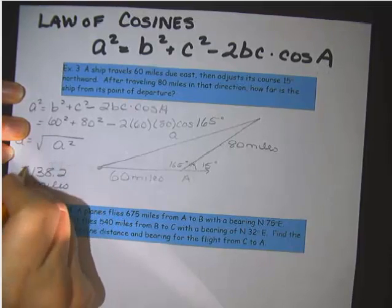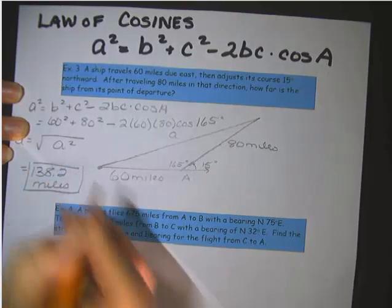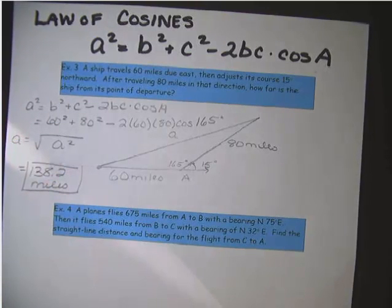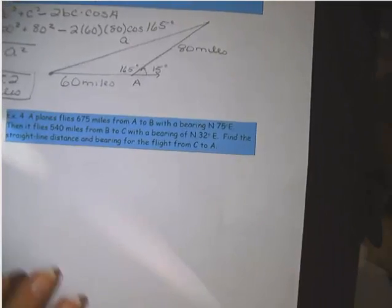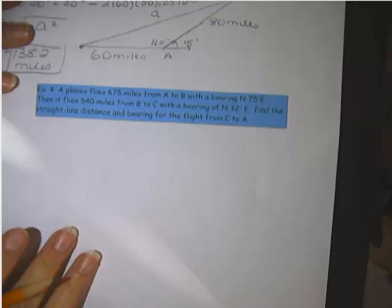So try that with your calculator. Make sure you agree with the answer I got. A lot of times the errors on law of cosines come from errors in calculating. Okay, then the next one. This one's a little more difficult.